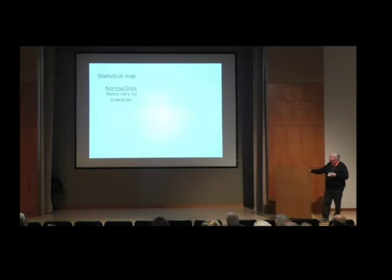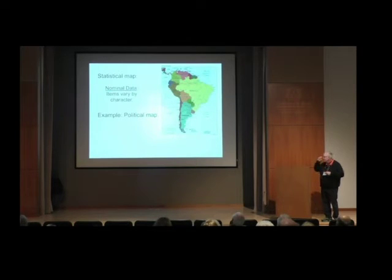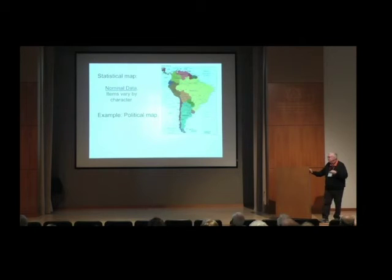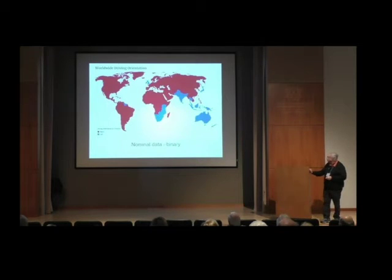With nominal data, there's nothing numerical associated with the categories. Political maps are the best example — different countries colored by political associations. Here's a binary nominal map: which side of the road do you drive on? Most places drive on the right, except countries that came under British influence, and Japan. Another binary map shows metric versus non-metric systems — we're in the minority, along with only Liberia and Thailand. Liberia uses our system because it was established by returned slaves. Another nominal map shows the leading cause of lost years of life — heart disease, HIV, malaria — with heart disease being the primary cause pretty much universally.